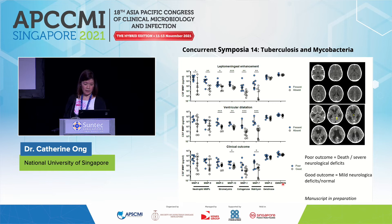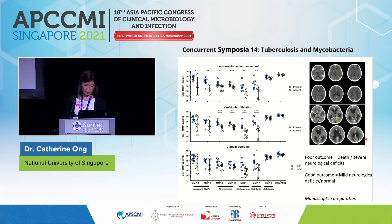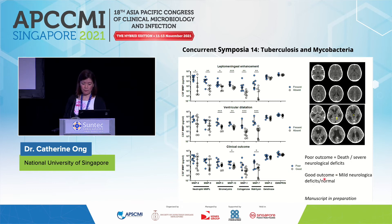Looking at radiological outcomes — leptomeningeal enhancement and hydrocephalus — she compared a child with a normal CT brain to one with hydrocephalus and leptomeningeal enhancement. She showed that in patients with leptomeningeal enhancement, CSF MMPs are increased. In those with ventricular dilatation suggestive of hydrocephalus, MMPs are also increased. Patients with poor outcomes, defined by death or severe neurological deficits, tended to have higher CSF MMPs compared to those with good outcomes.